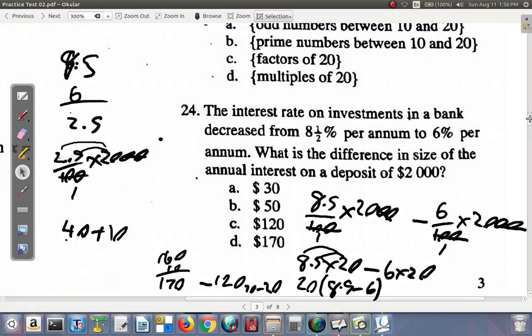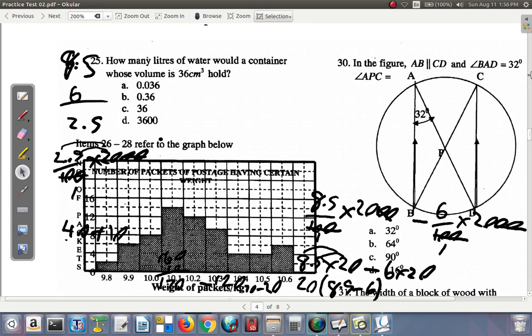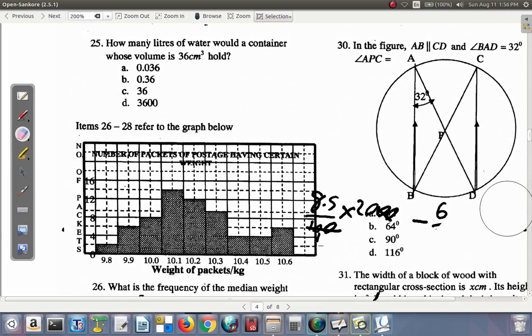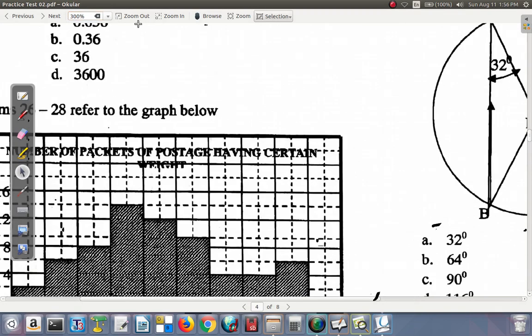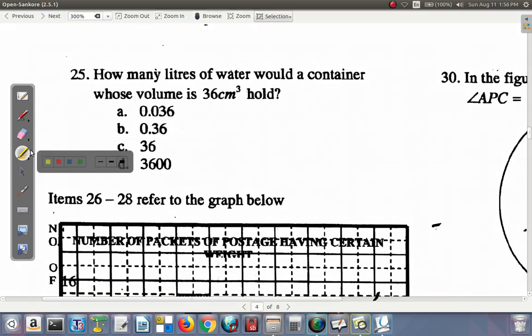Now, we go to question 25. We're seeing question 25 here. Let's erase the rough work that we had before and look at question 25. We could very well zoom in a bit. Now, what we have here is how many liters of water would a container whose volume is 36 centimeter cubed hold?